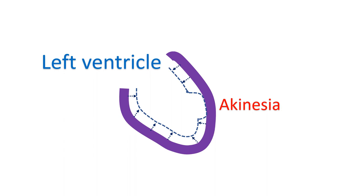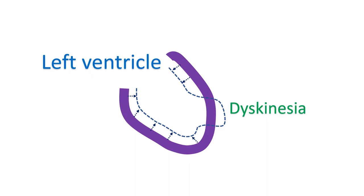Dyskinesia means one region of heart muscle is bulging out when the rest of the heart muscle is contracting. This indicates a more severe form of damage to the heart muscle, usually due to a block in the blood vessel. The region is scarred and thinned out so that it bulges out when the pressure inside the heart chamber increases as the rest of the heart muscle contracts.